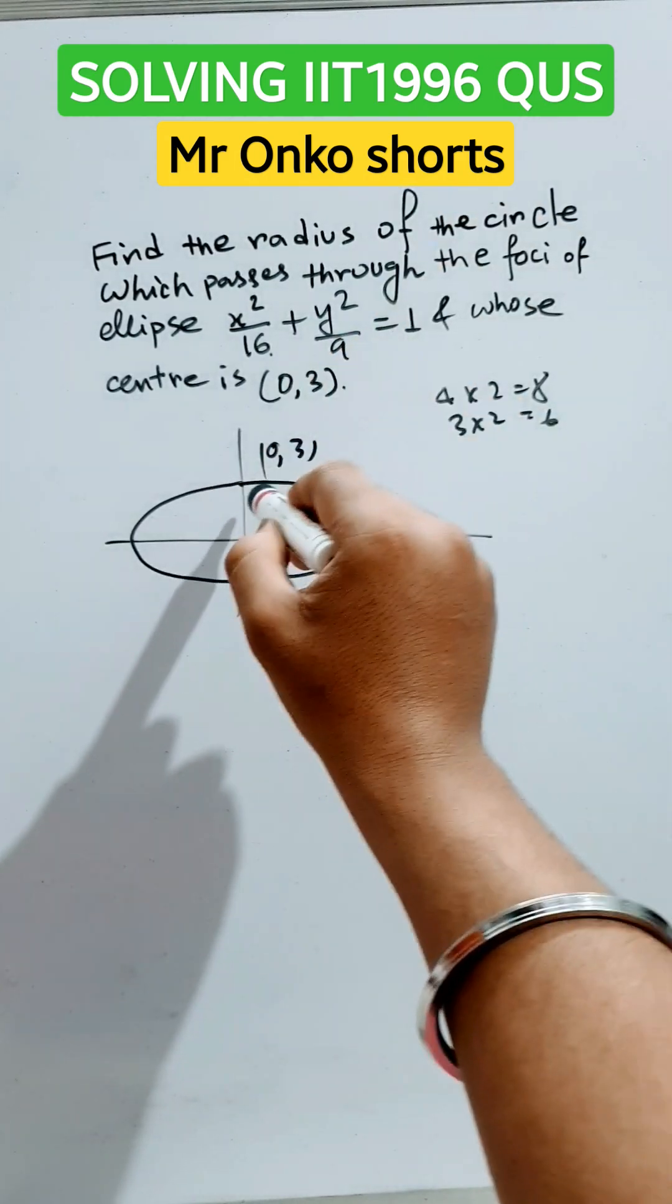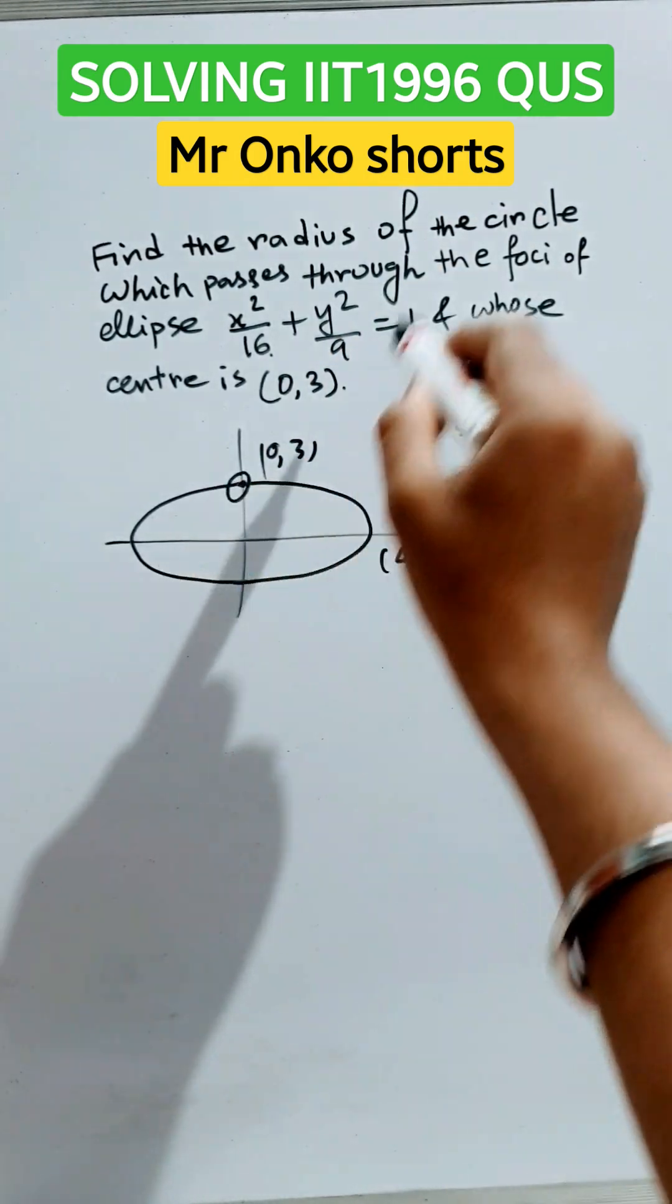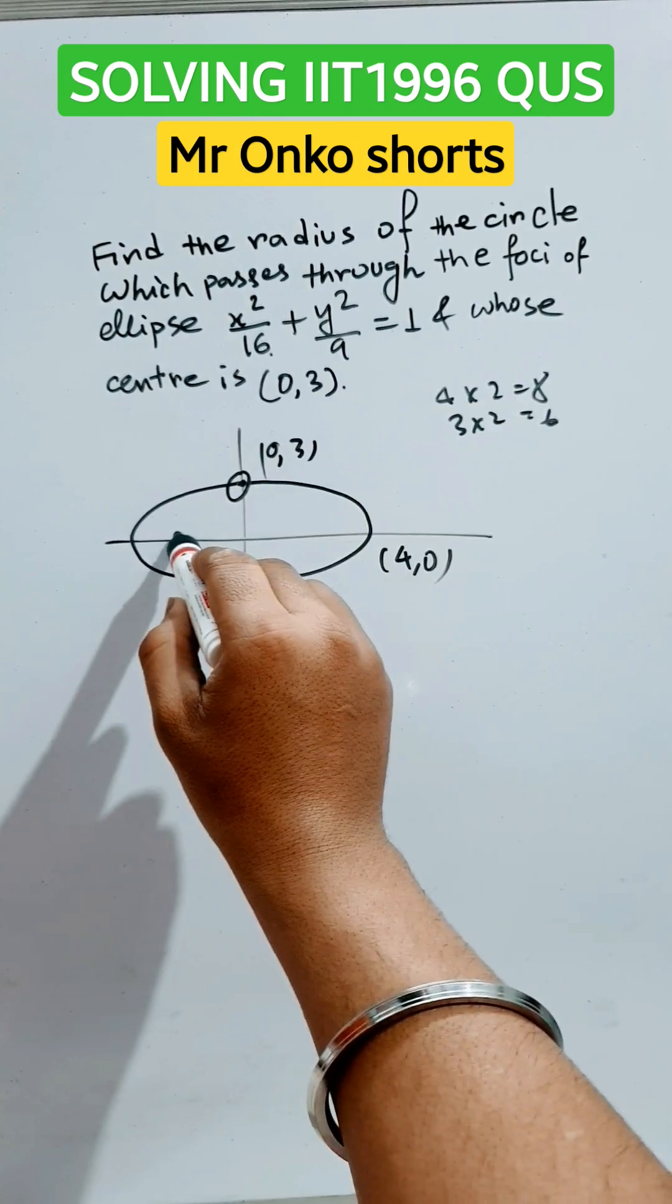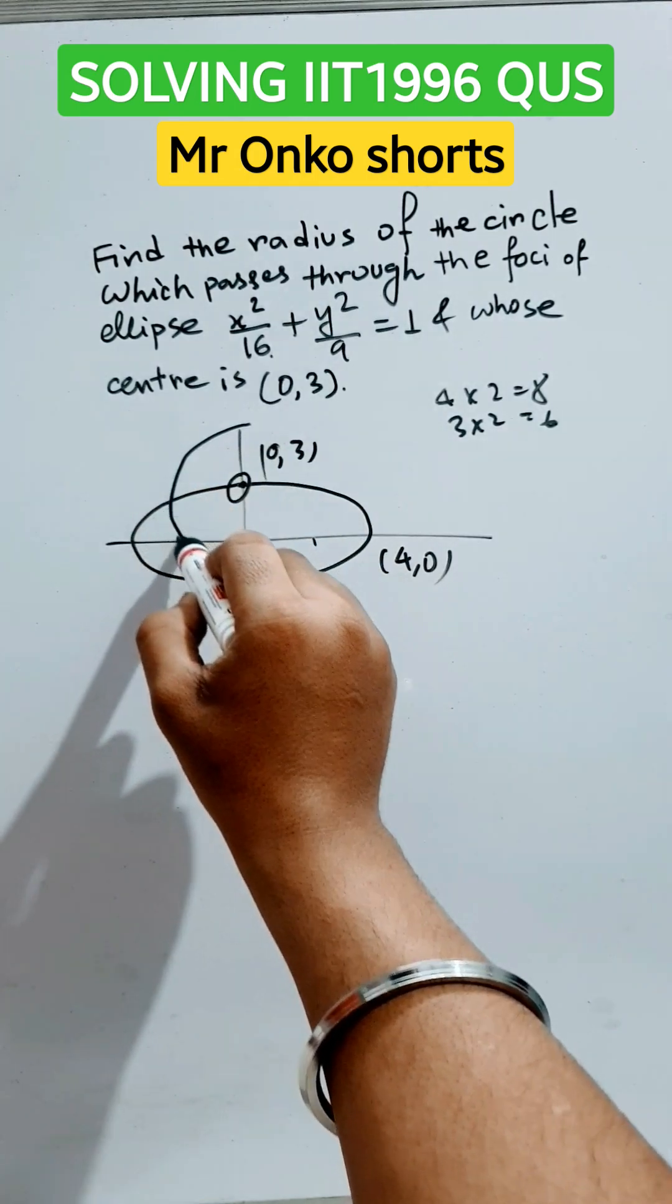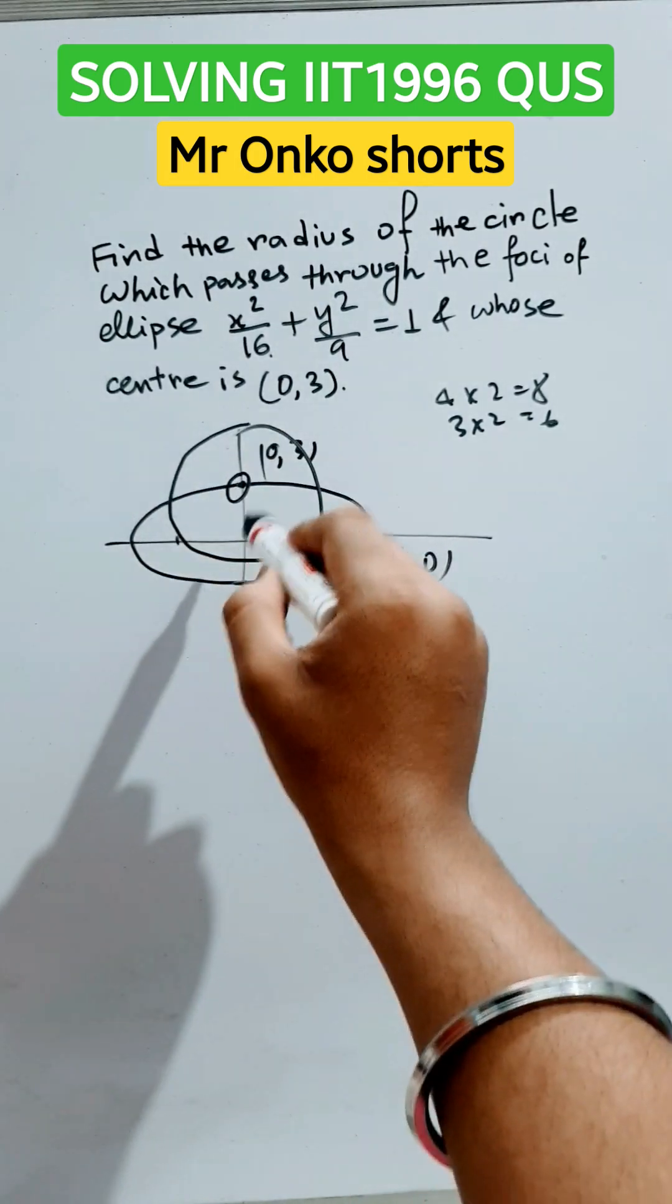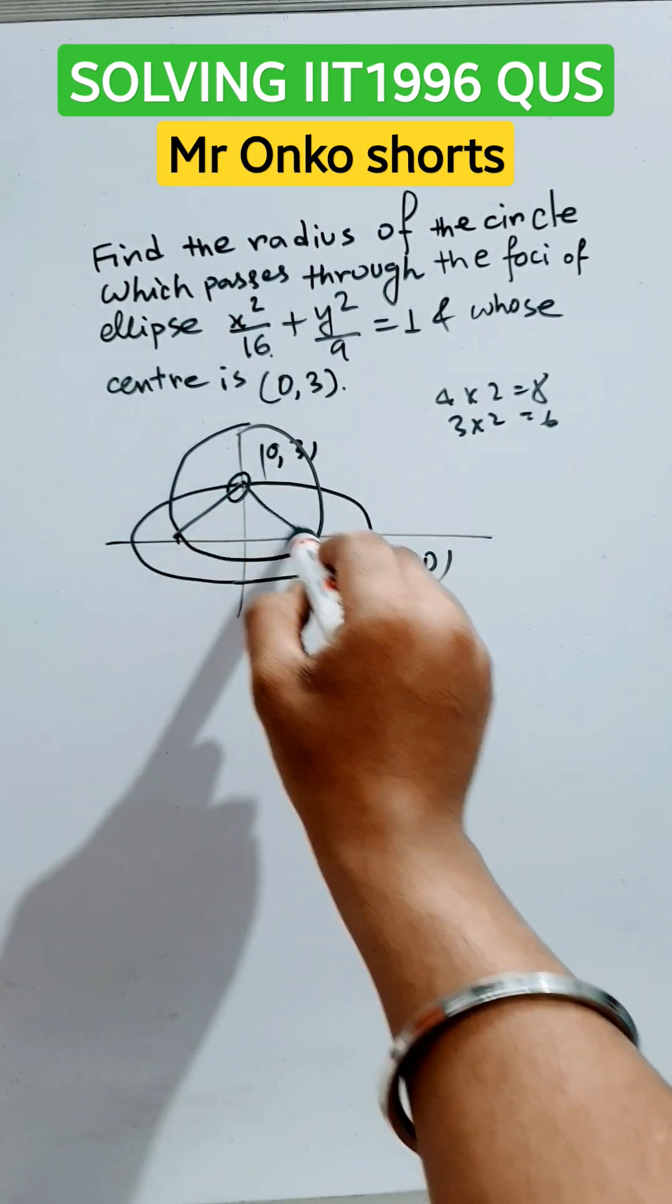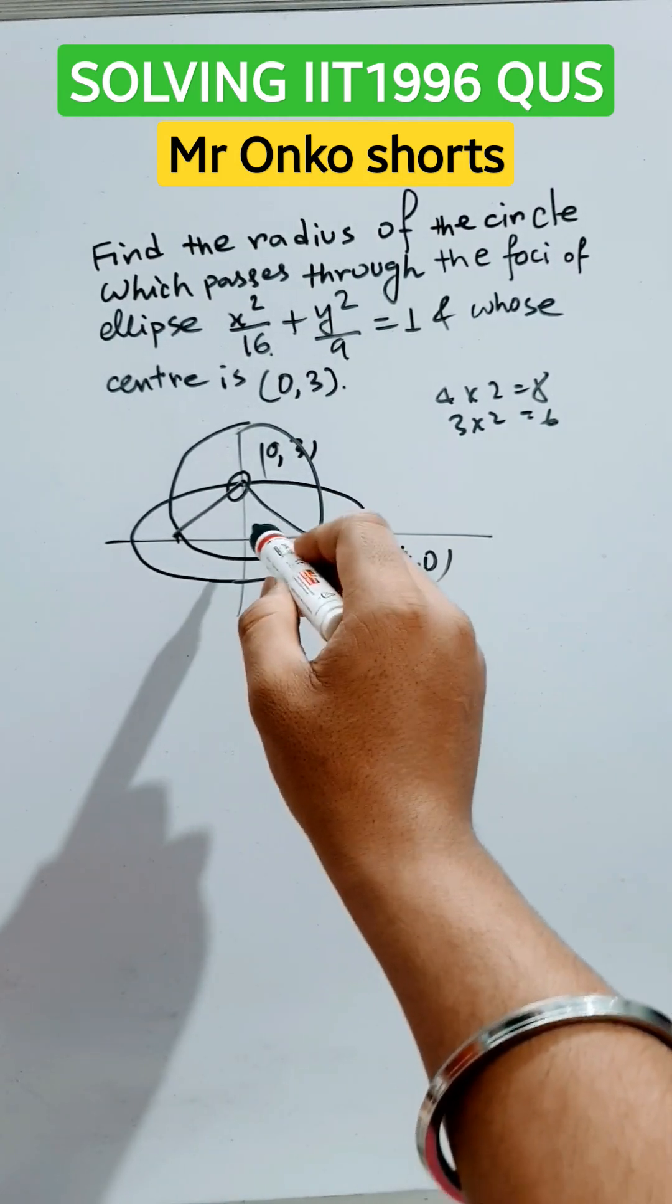Now the center of the circle is also (0,3), so it will be the center of the circle also, and the circle is passing through the foci. So these two will be the foci of the ellipse. So the circle will be like this and this is the center. These two are the radii and we have to find the radius.